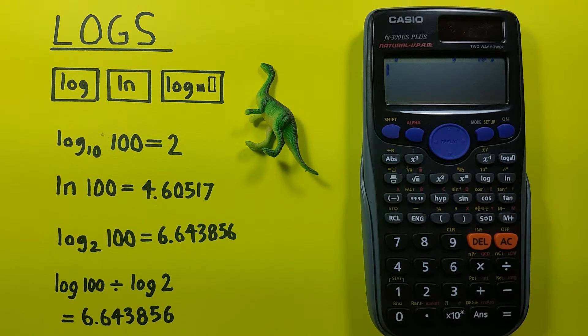But what if we're using a calculator that doesn't have this miscellaneous log key? Well, in that case we can use something called the change of base formula. In that formula we divide the log of the number by the log of the base.